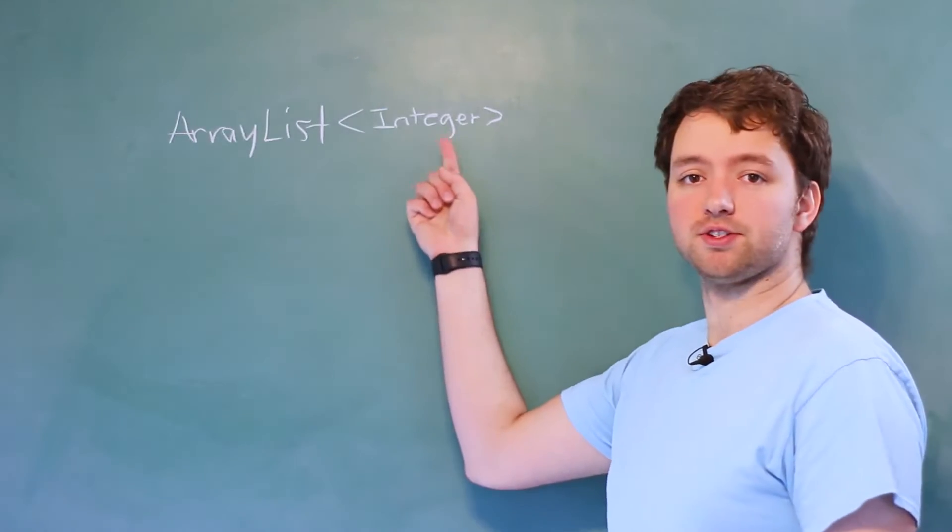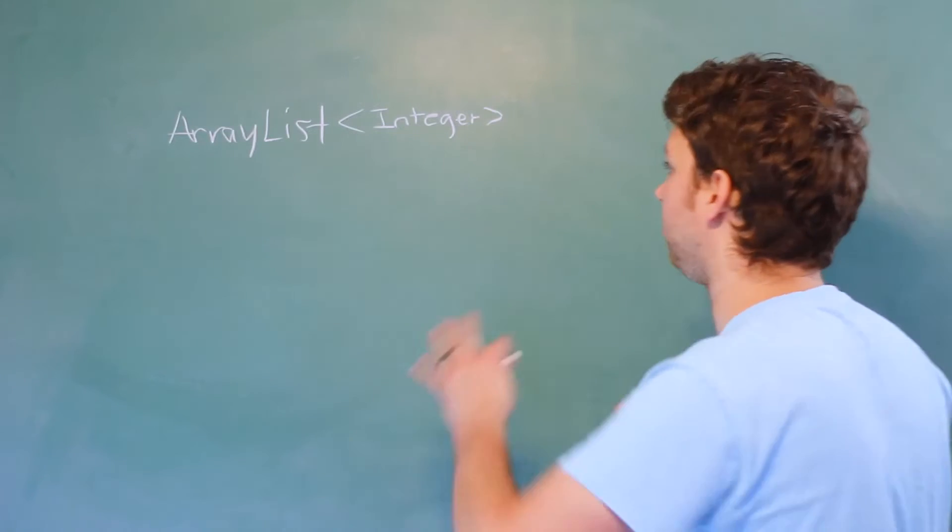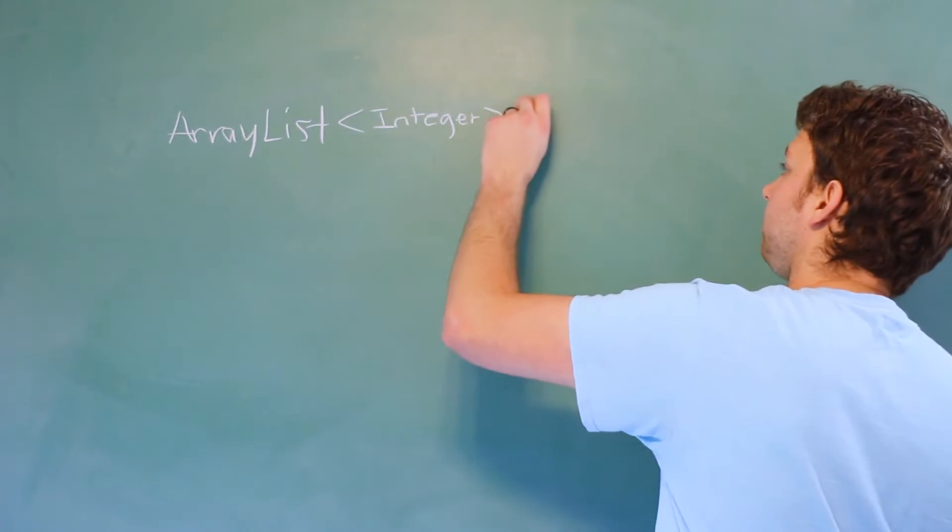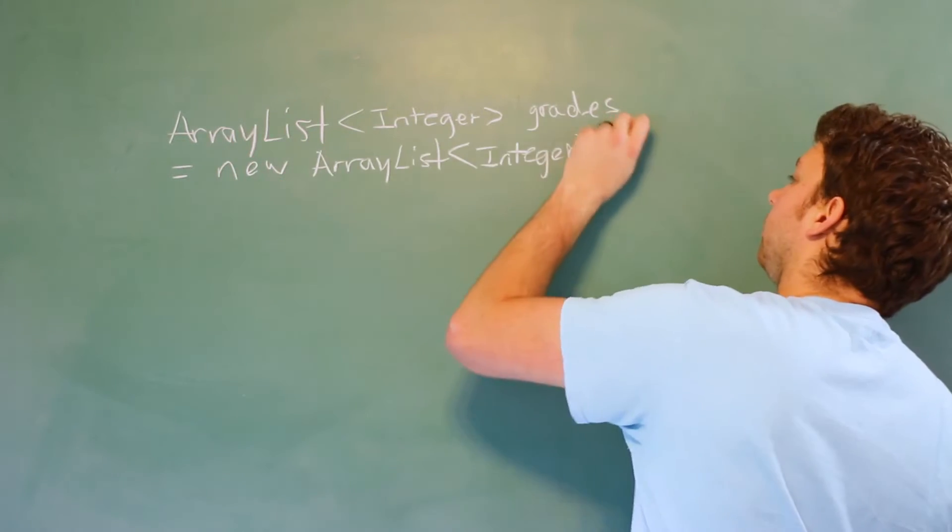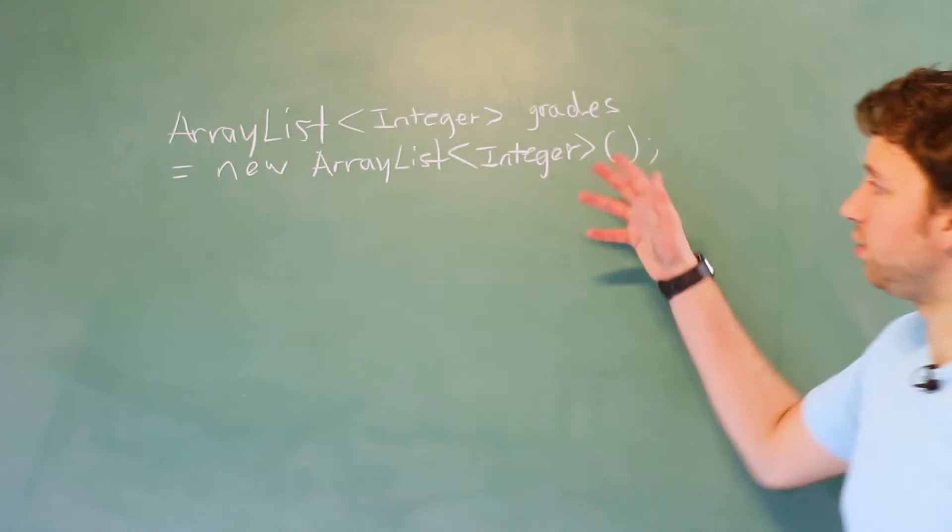Now, we'll talk about this in just a second, but first, let's finish out the rest of this. We're going to give it a name, and then we can assign it a new array list and then parentheses. All right, so that's the whole thing.